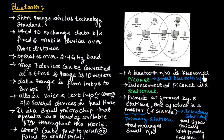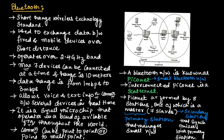A Bluetooth network is known as a Piconet. There is a single device known as the master node, and several other devices communicating with it are known as slave nodes. This combination is known as a Bluetooth network, commonly called a Piconet. A Piconet is a small Bluetooth network, and the interconnection of two or more Piconets is known as a Scatternet.